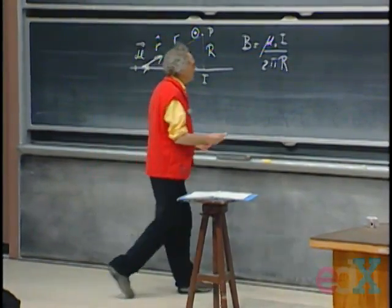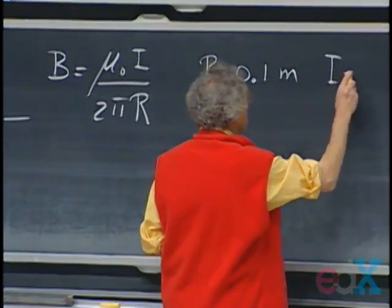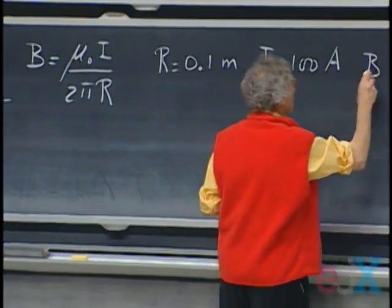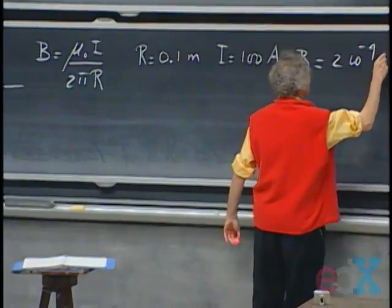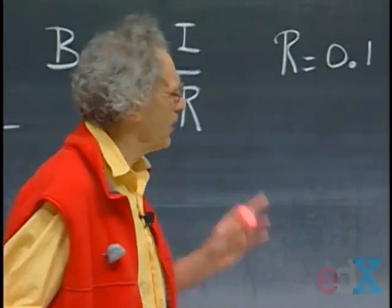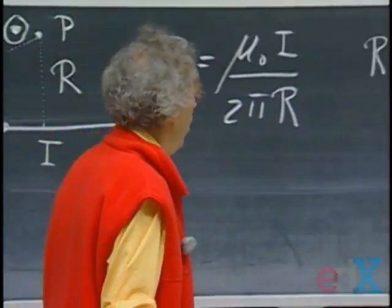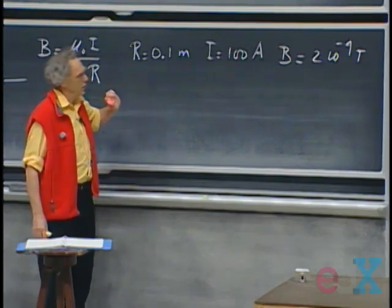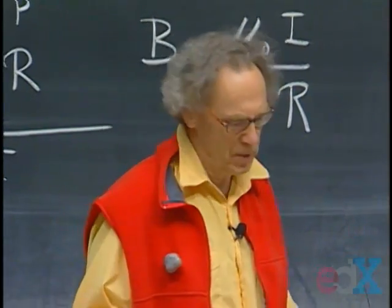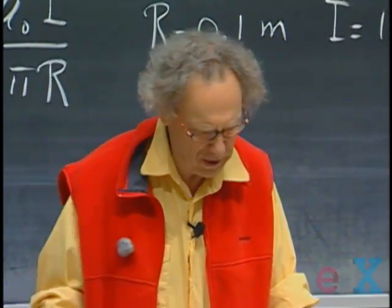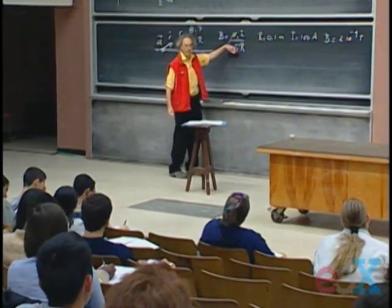For example, take a radius of 0.1 meters — ten centimeters — with a current of about 100 amperes. You end up with a B field of two times ten to the minus four Tesla, which is about two Gauss. Think about it: the Earth's magnetic field is half a Gauss. If you go one meter away from the wire, the field is ten times lower, and the Earth's magnetic field already dominates substantially. So you need very high currents when you do these experiments.